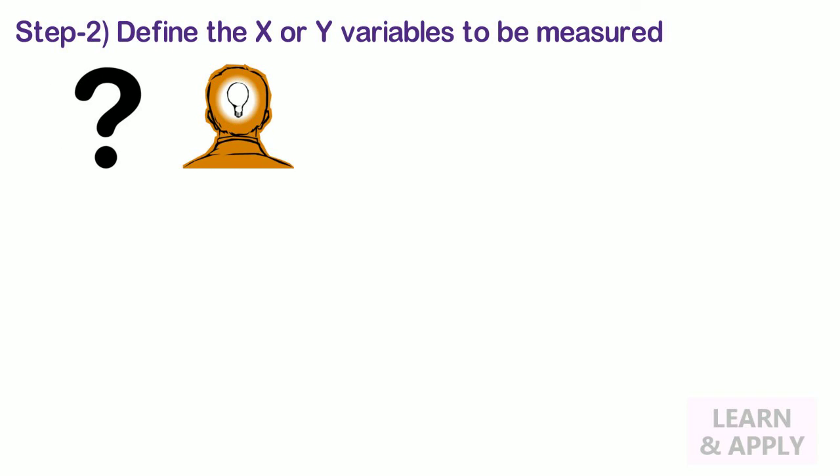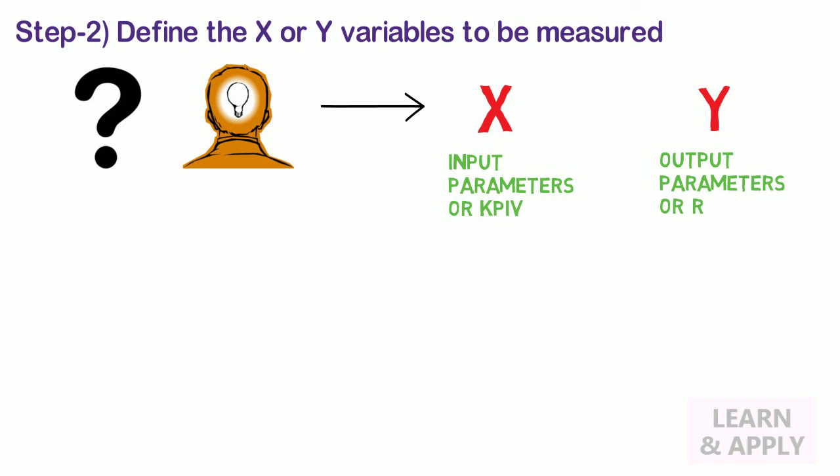Step 2: Define the X or Y variables to be measured. After collecting and more clearly formulating the questions and hypotheses, define the X and Y variables to be measured. Here, X variables means input parameters or KPIVs, and Y variables means output parameters or results, also called KPOVs.